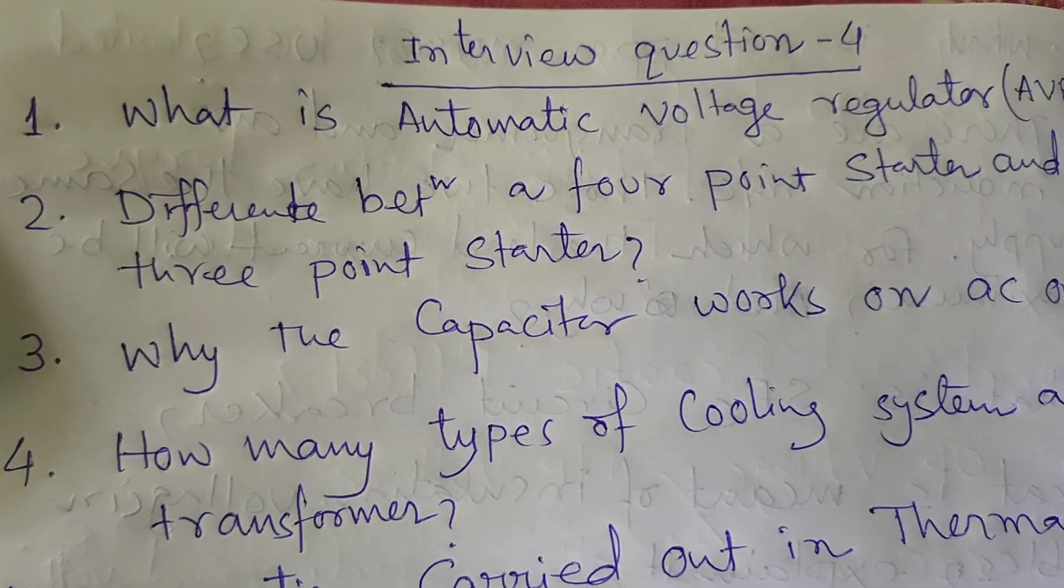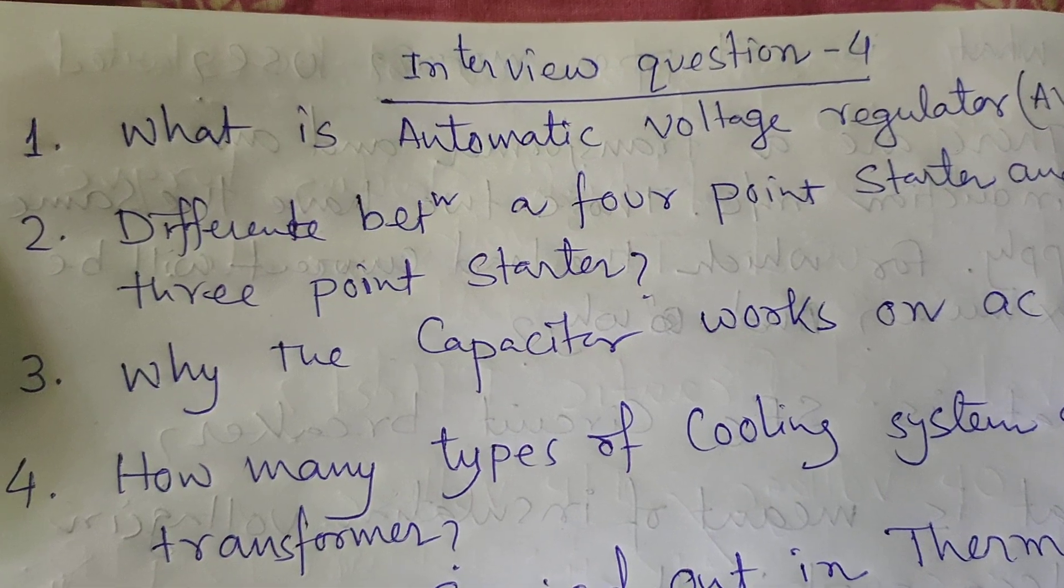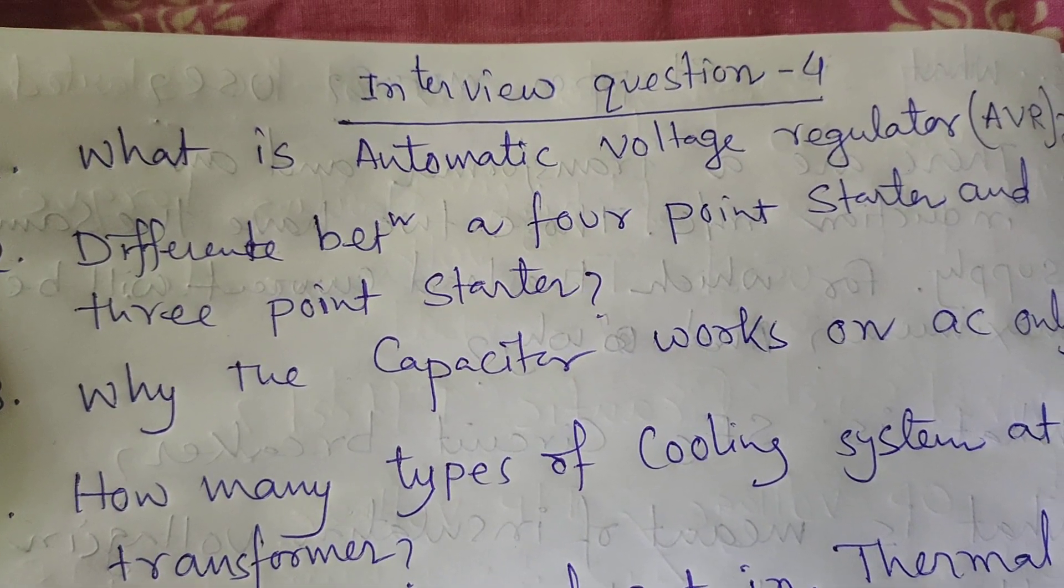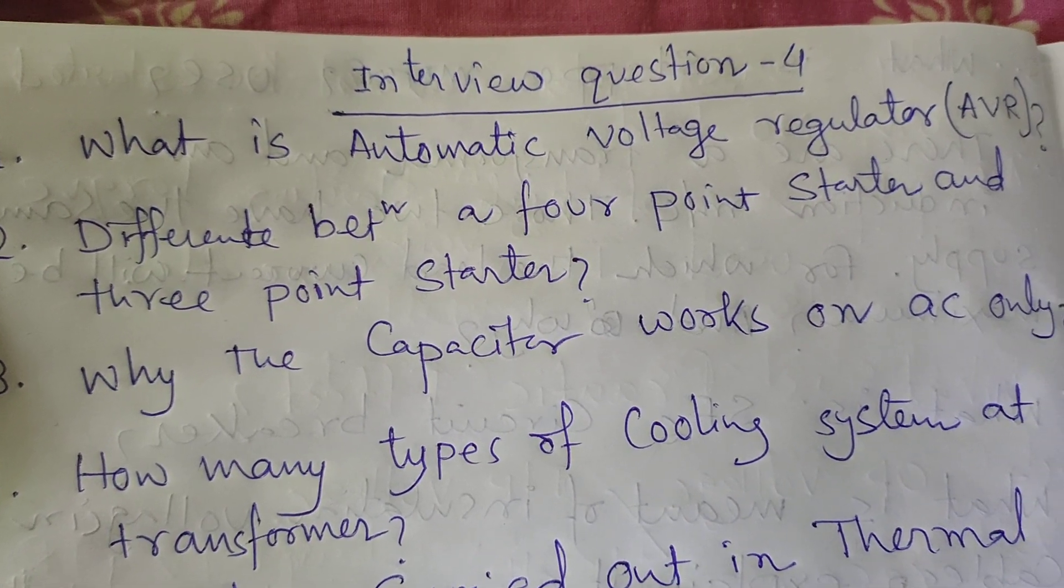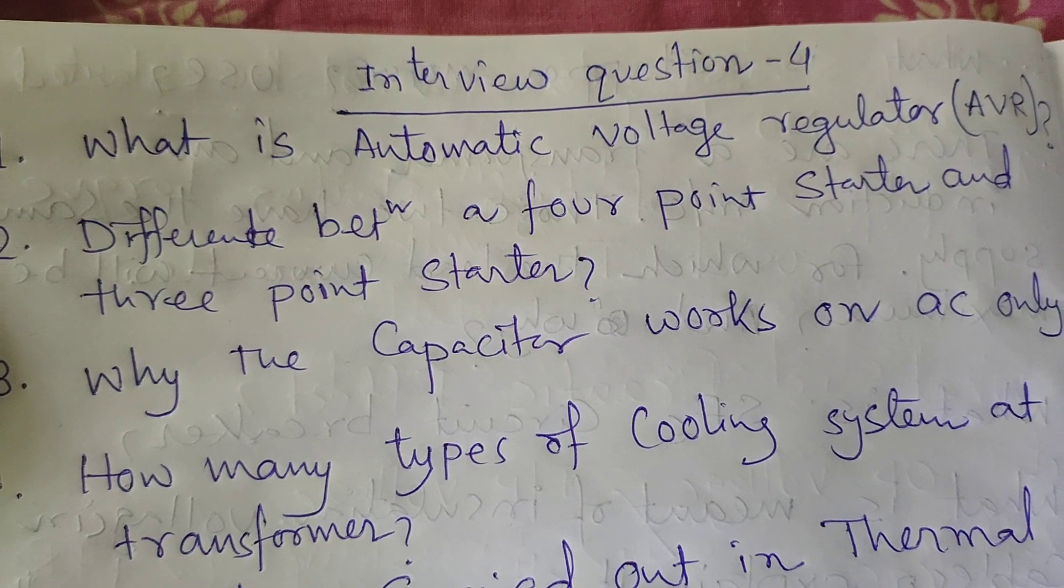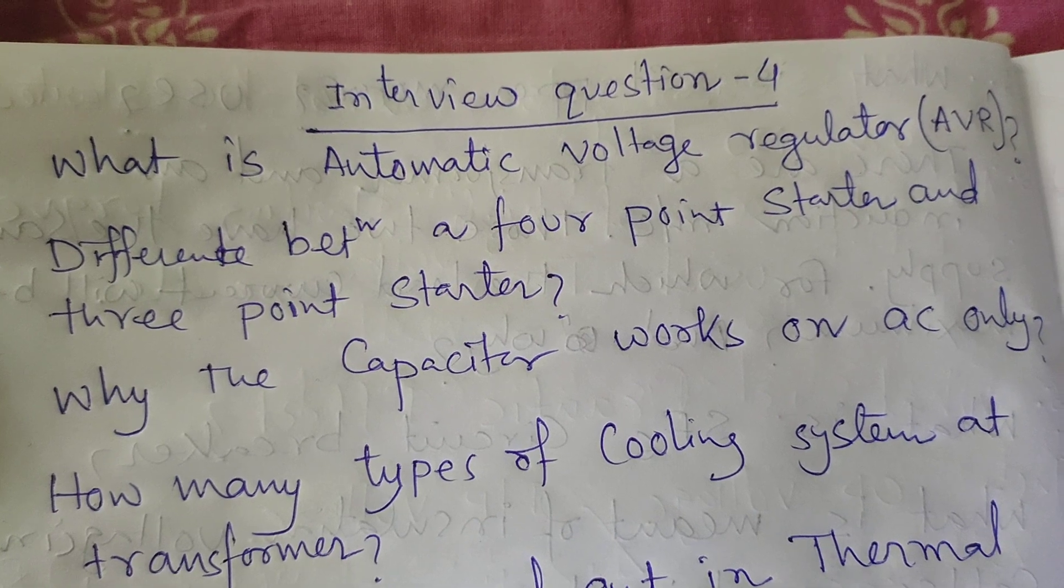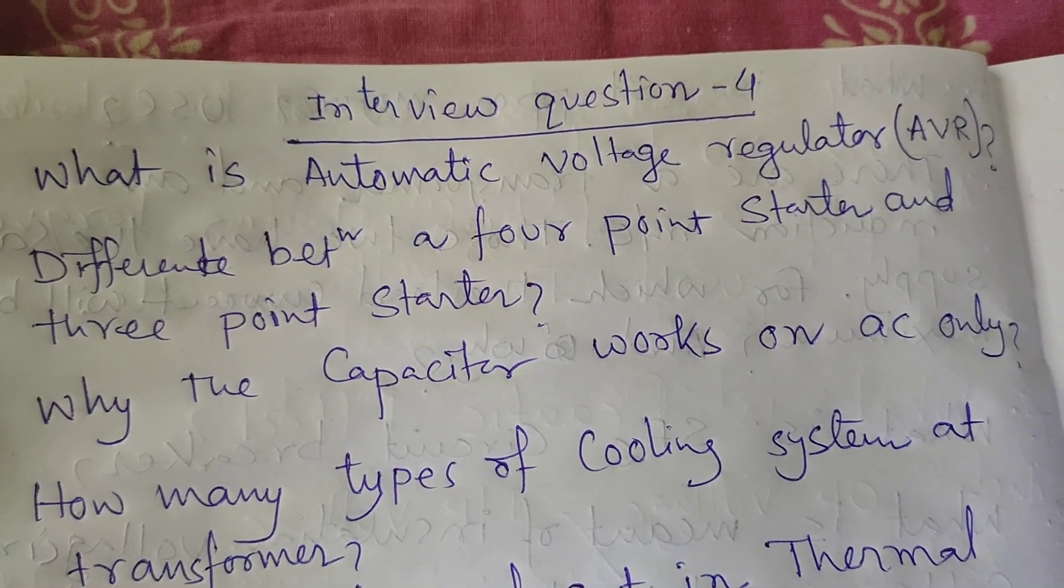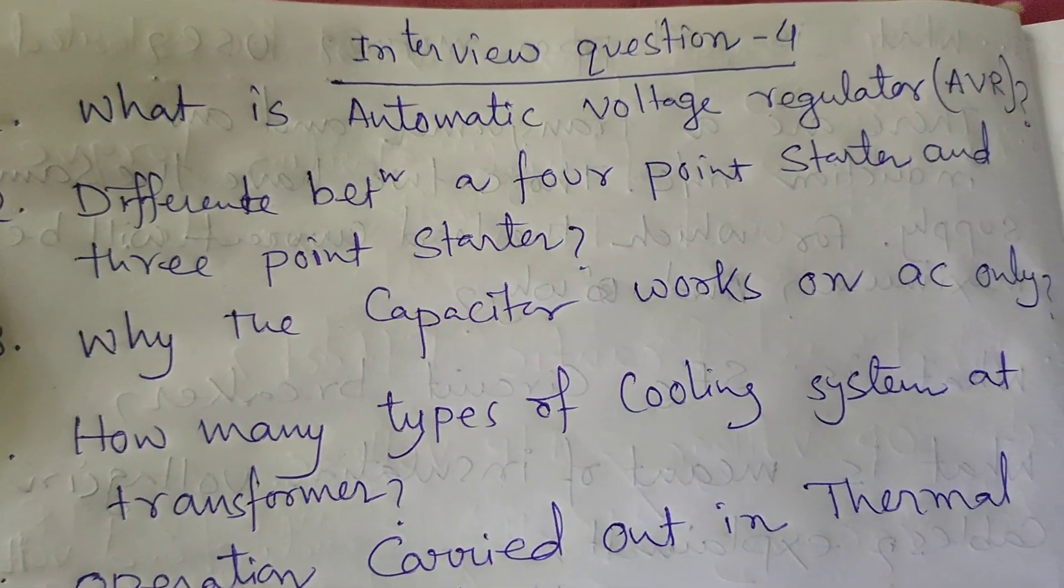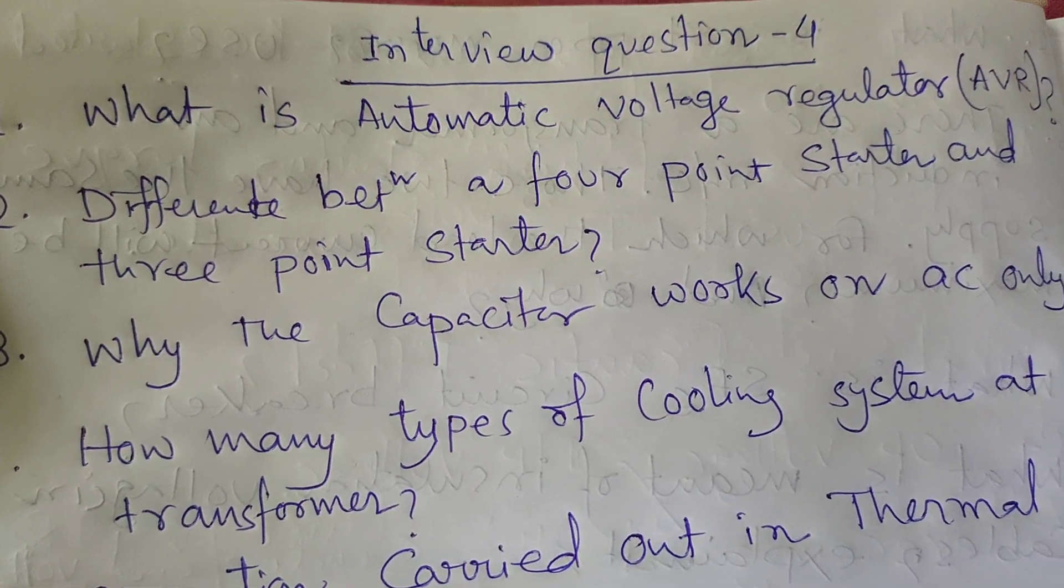Second question: Difference between a four-point starter and three-point starter. The sand connection in four-point starter is provided separately from the line, whereas in three-point starter it is connected with the line, which is the drawback of the three-point starter.